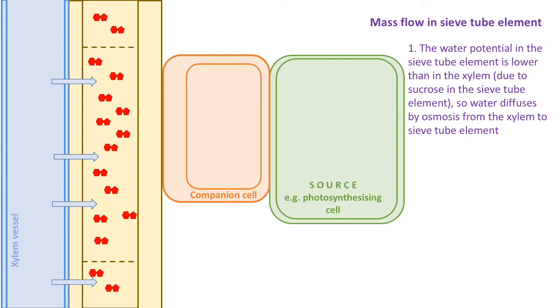Because there is now more water that has moved into the sieve tube element, hydrostatic pressure increases in the sieve tube element at the source. Let's now look at the next four steps.